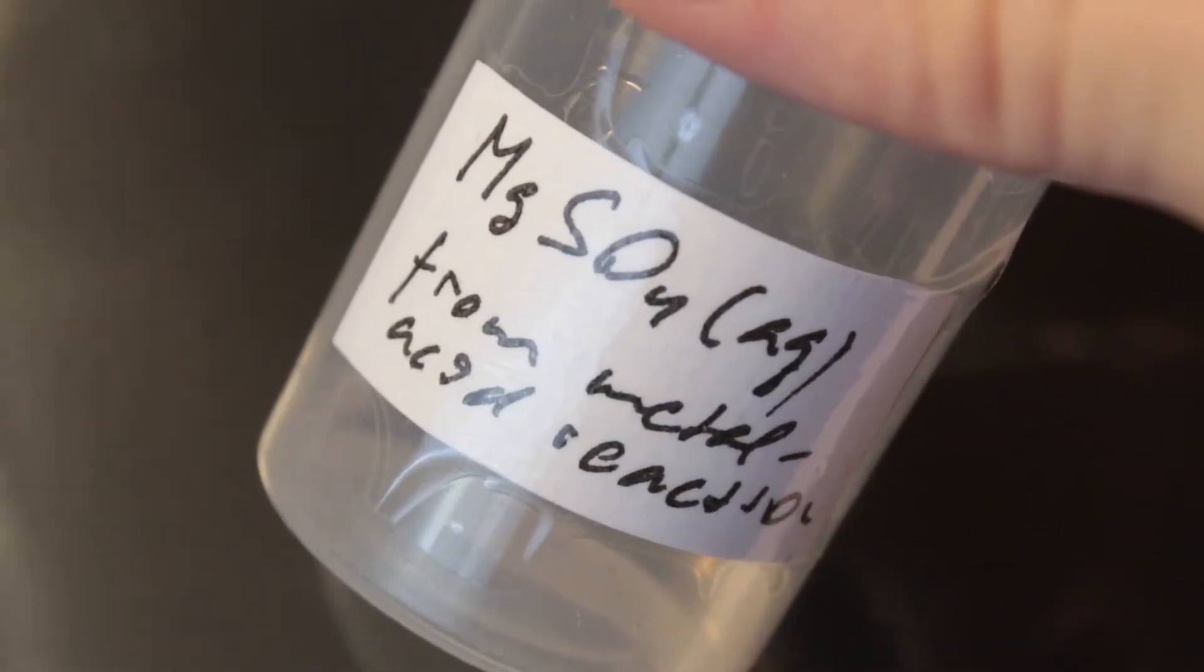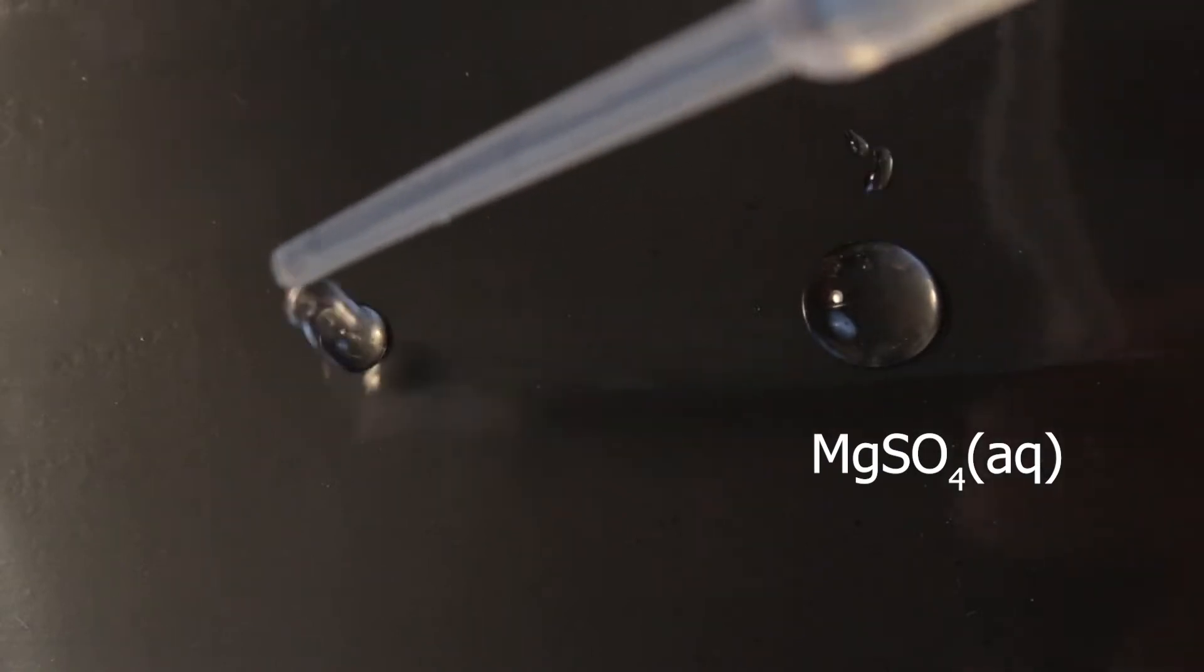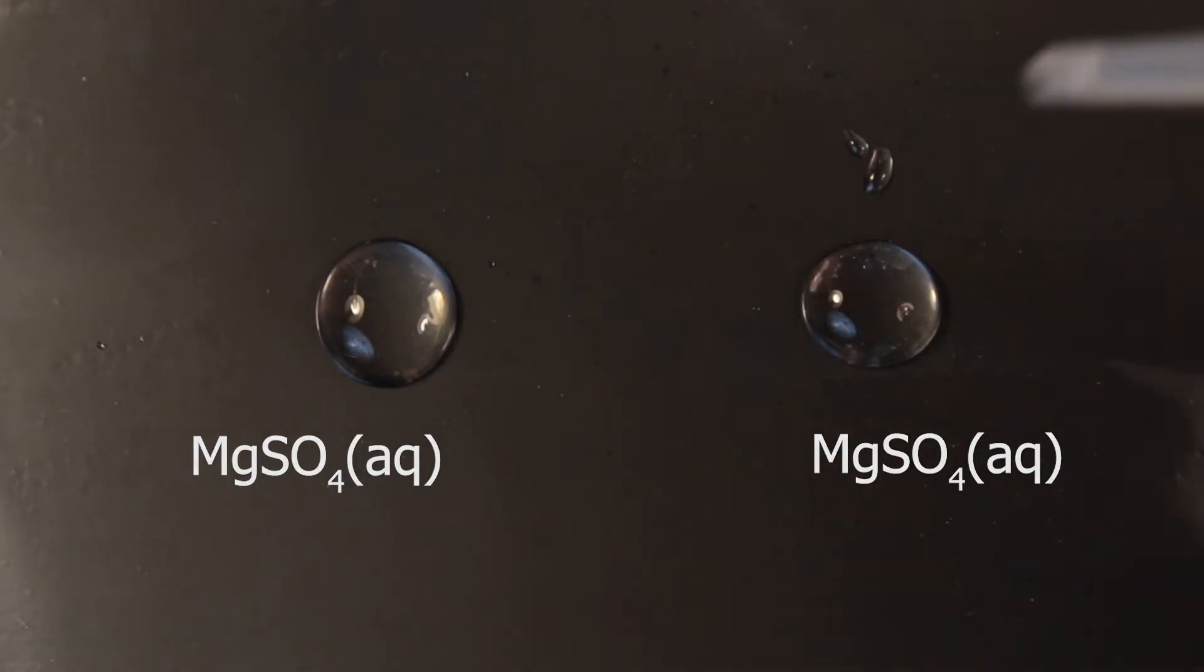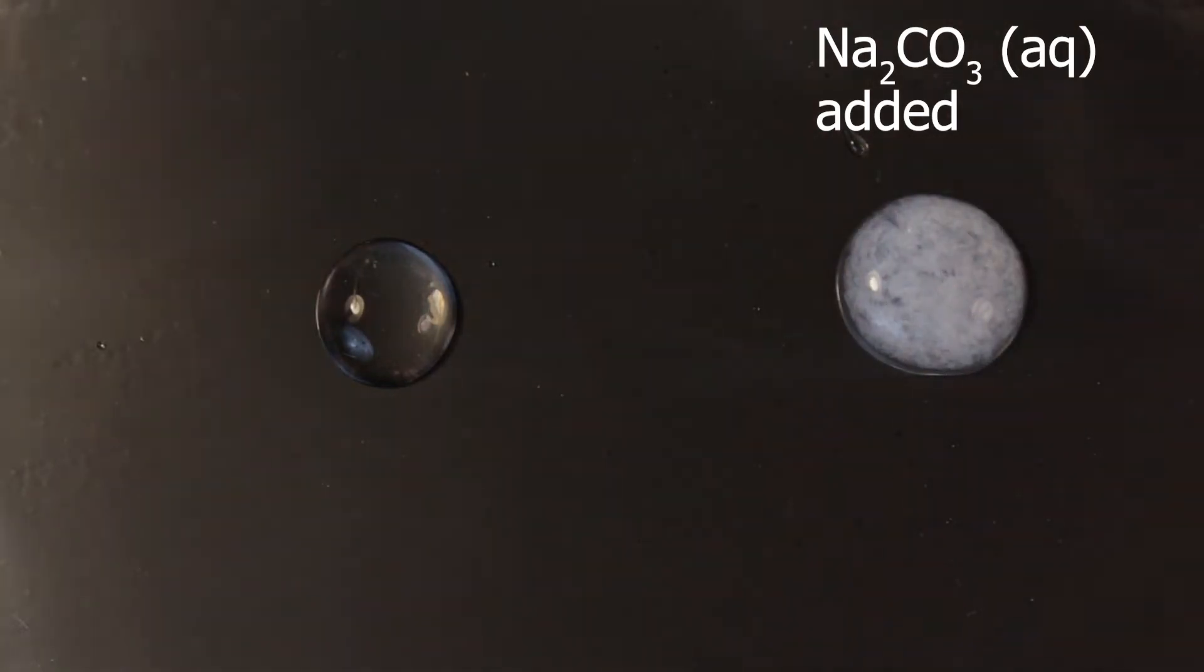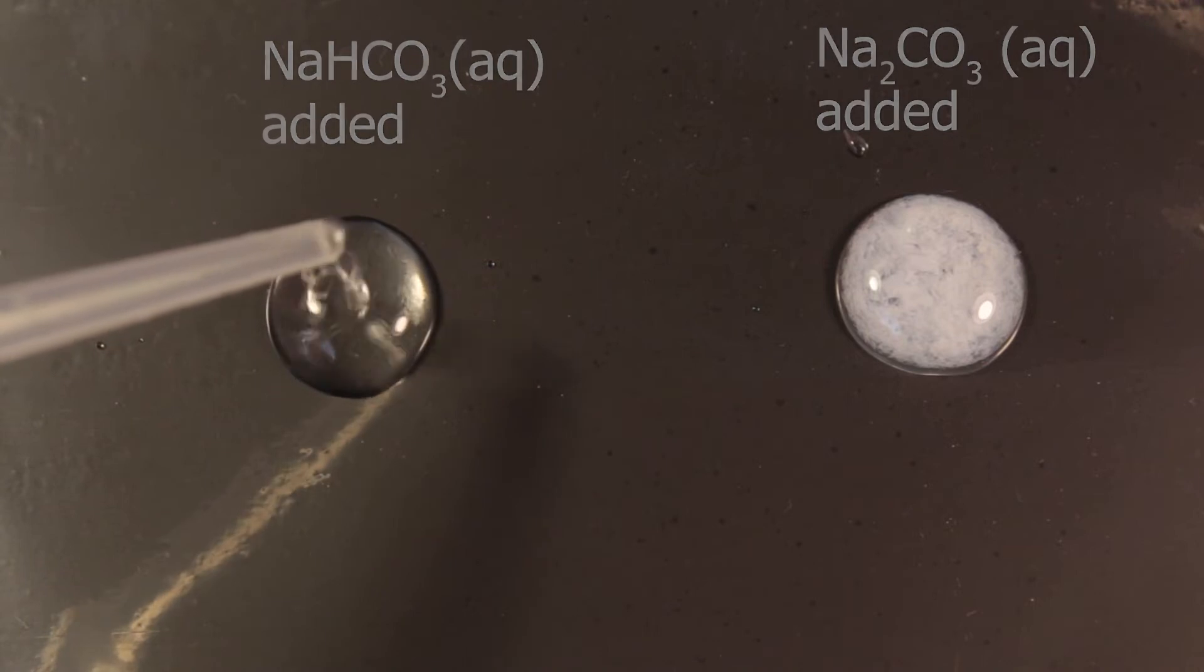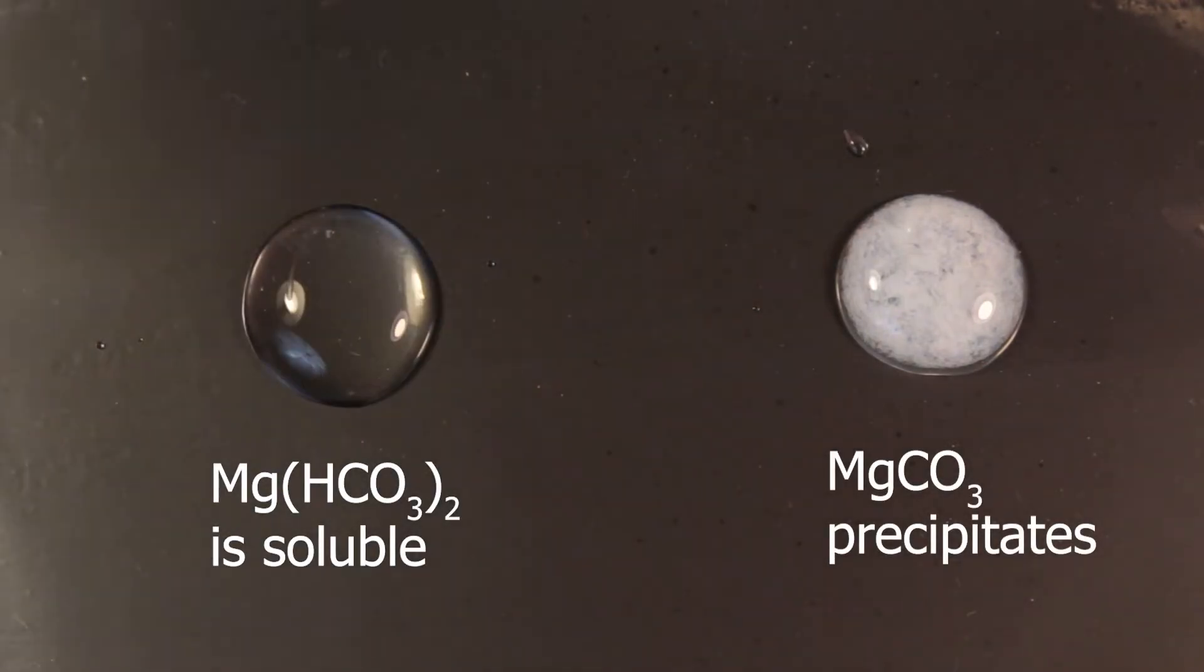Now let's check solubility. We use magnesium sulfate salt as an example, and let's add carbonates and hydrogen carbonates to it. Hydrogen carbonates are soluble. Carbonates, though, are insoluble.